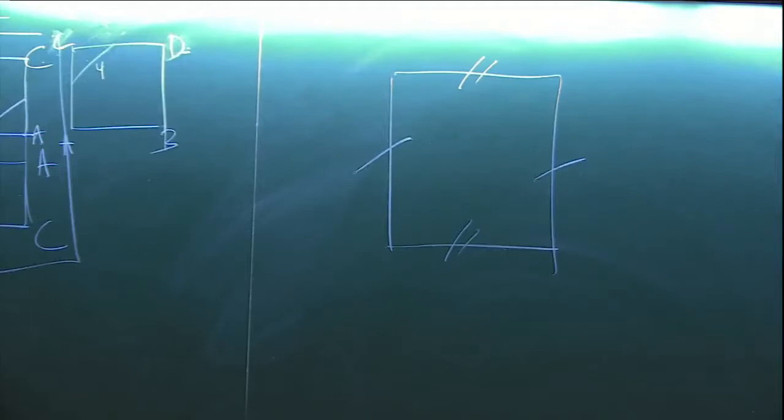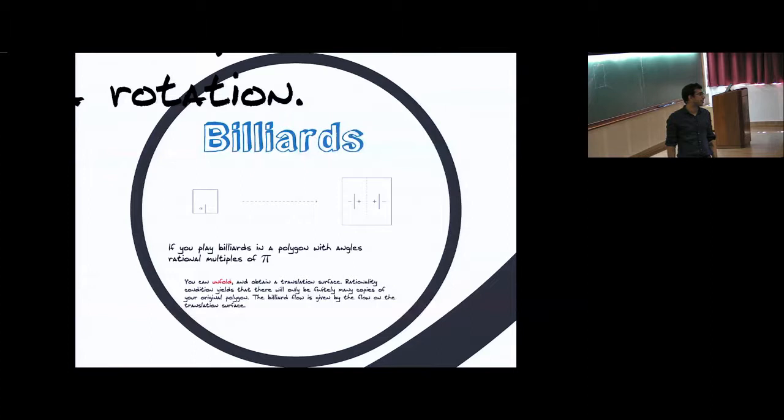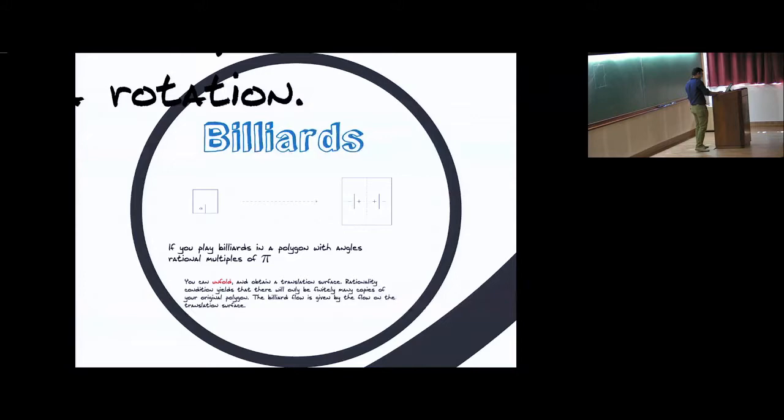I didn't always rely on getting a torus out of this — all I really relied on is that after reflecting a finite number of times, I got a translated copy of my original polygon. That is, if I looked at the lines of the polygon through the origin — that's an equivalent condition to the angles being rational multiples of pi. This is a nice easy exercise. A very similar gluing drawing, just keeping track of the barrier, gives you: if you start with billiards and the barrier, you get a square with opposite sides identified, plus a slit in each square with minus glued to minus and plus glued to plus. This gives a surface with two singular points.